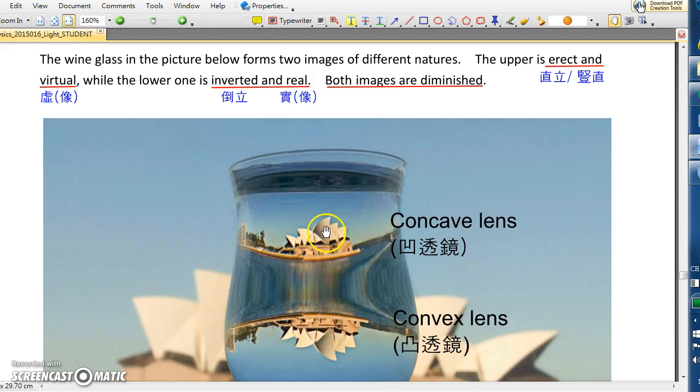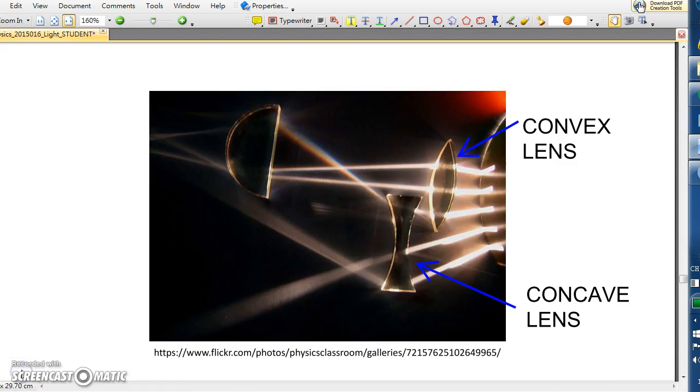The two different parts of the wine glass perform like concave lens and convex lens respectively. Today you are going to do an experiment using convex lens and concave lens and to investigate the images formed by them.